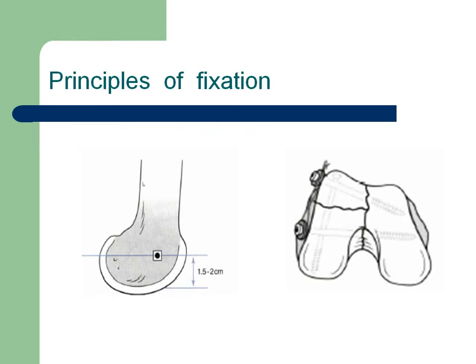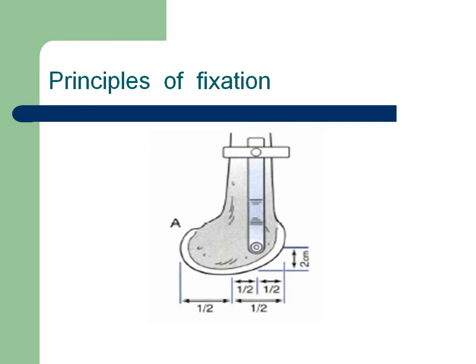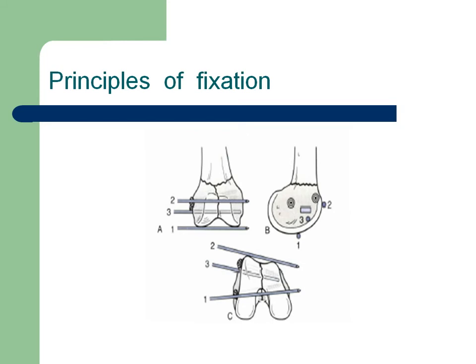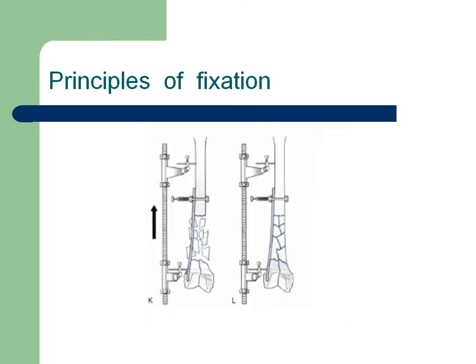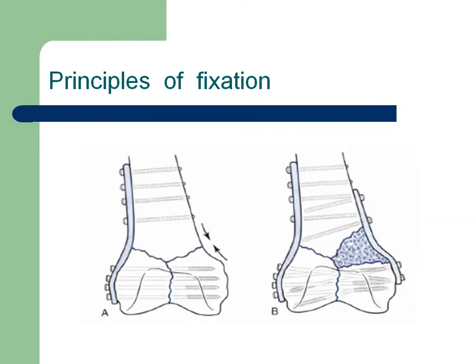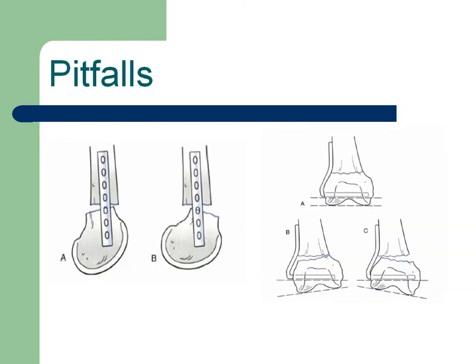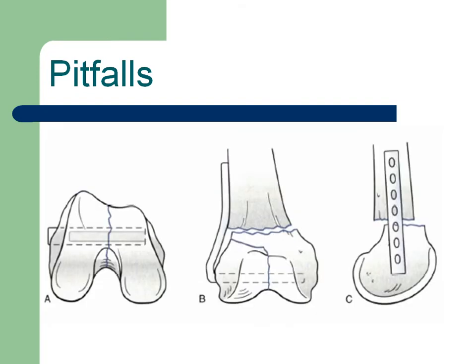The principle of fixation is important. On the lateral X-ray, we divide the condyle in half — anterior and posterior. The blade must be placed between the anterior half, with the distance to the articular surface approximately 1.5 to 2 centimeters. The blade or angle plate or DCS must be parallel to the articular line for better fixation and control of the fragments. If this is not achieved, angulation — posterior or anterior — between the two fragments will result.